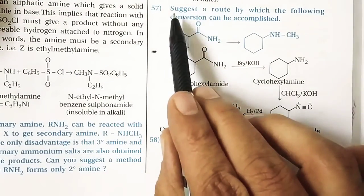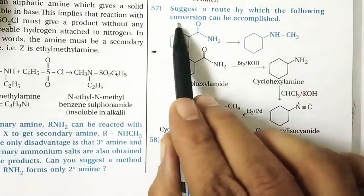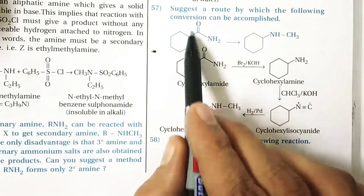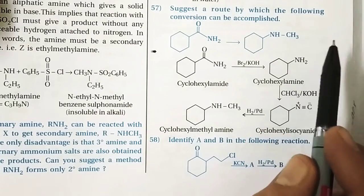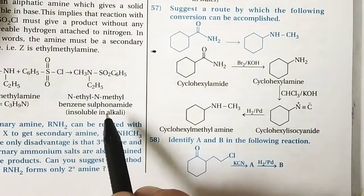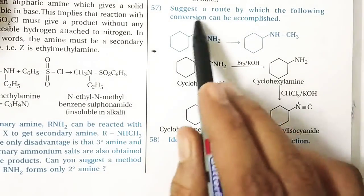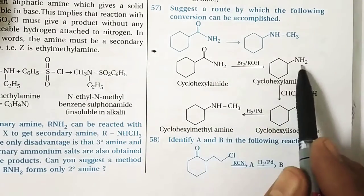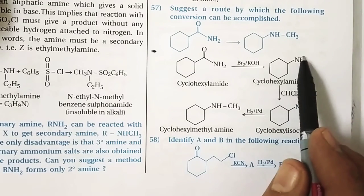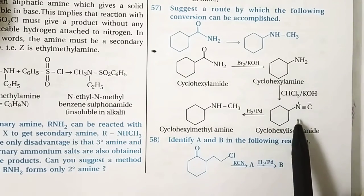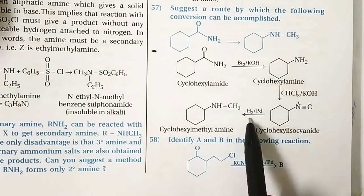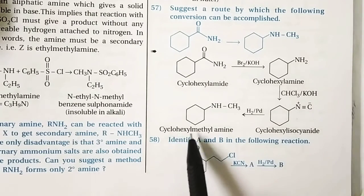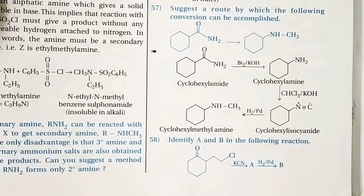Question 57: Suggest a route for the following conversion. The C=O group needs to be removed from the NHCH3 structure. Using the Hoffmann bromamide process, the carbonyl group is eliminated to give cyclohexylamine. This primary amine is then subjected to the carbylamine reaction to give cyclohexyl isocyanide, which upon catalytic reduction gives cyclohexylmethylamine.